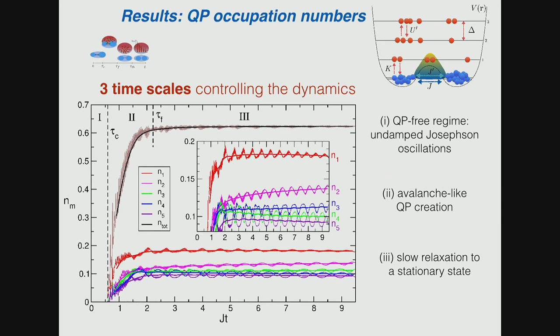There will be terms associated with the condensate and interactions and these quasi-particles and interactions between them. Then interactions between quasi-particles and condensed particles and all kinds of mixed terms. In addition there will be Josephson, a typical Josephson term plus Josephson renormalized term, basically Josephson assisted, quasi-particle assisted tunneling. There will also be inelastic collisions which will be responsible for eventual thermalization.